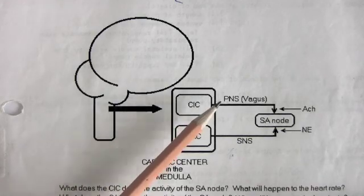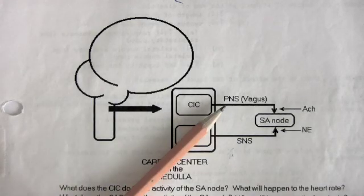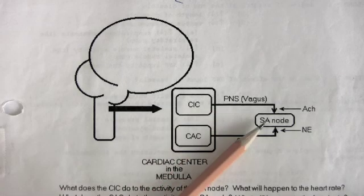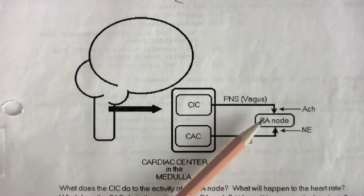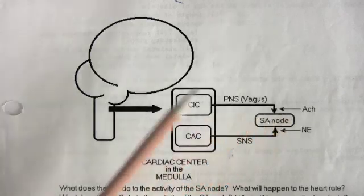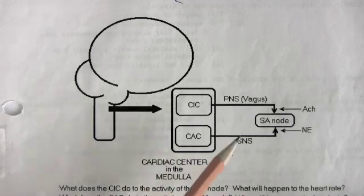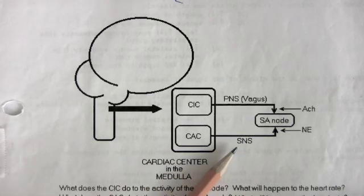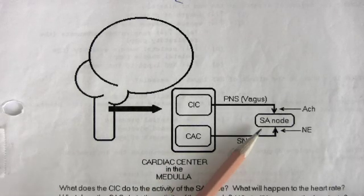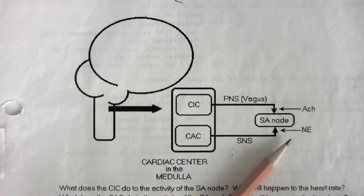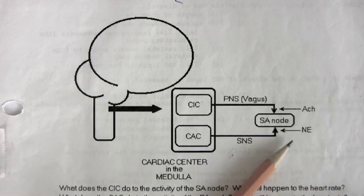The cardioinhibitory center transmits nerve impulses by way of the parasympathetic nervous system, which, remember, is the vagus, to the SA node. It secretes acetylcholine as its neurotransmitter. The cardioaccelerator center transmits by way of neurons of the sympathetic nervous system to the SA node. The sympathetic neurons secrete the neurotransmitter norepinephrine.